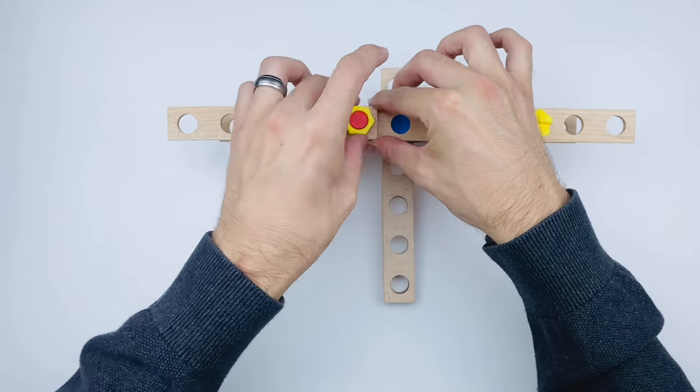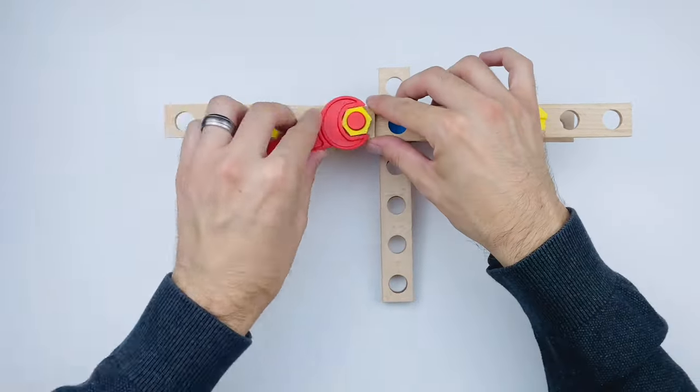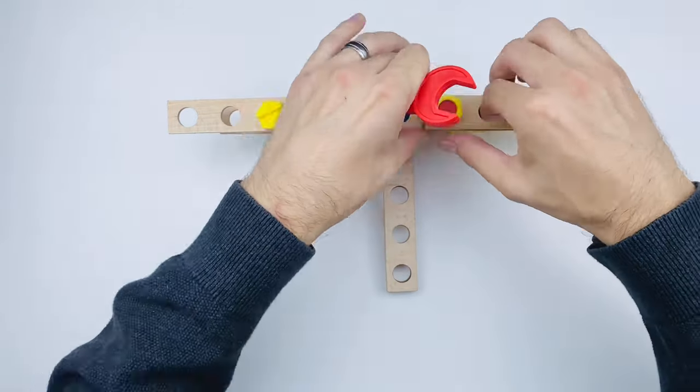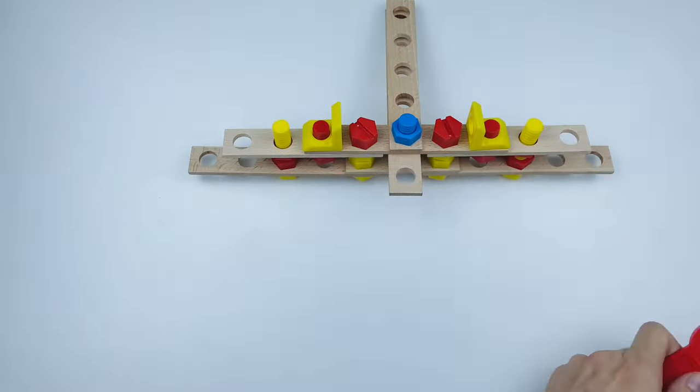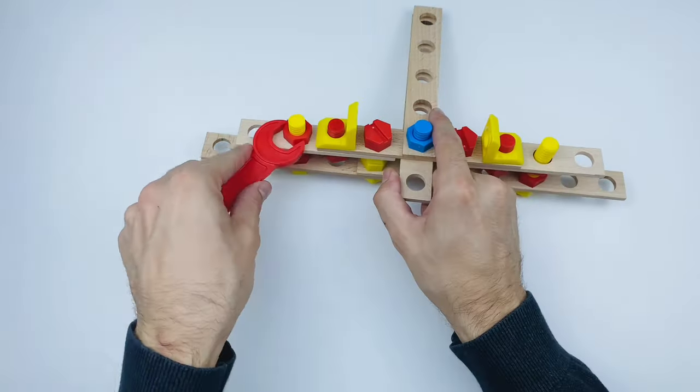Now we can fasten the top part of the wings to the bottom using two yellow nuts. And then two red nuts to fasten the yellow bolts on the bottom.